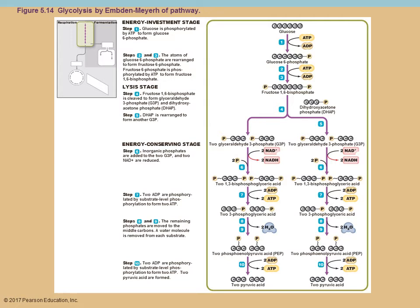Then NAD comes in and removes a pair of electrons, leaving as NADH, forming 1,3-bisphosphoglyceric acid. Next, ADP comes in, takes a phosphate off the end and leaves as ATP, giving you 3-phosphoglyceric acid. You lose a water molecule, shift the phosphate group around, eventually forming phosphoenolpyruvate, then another ADP comes in and takes that phosphate group off, producing ATP and finally yielding pyruvic acid.